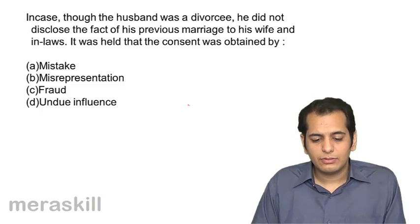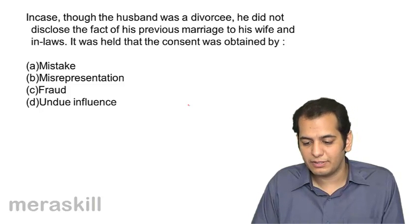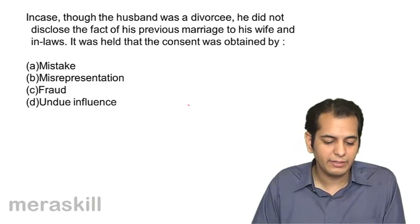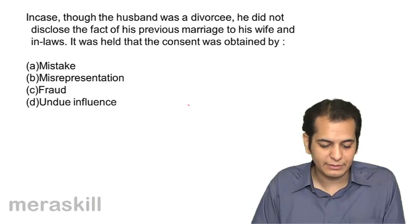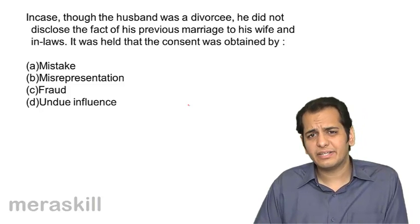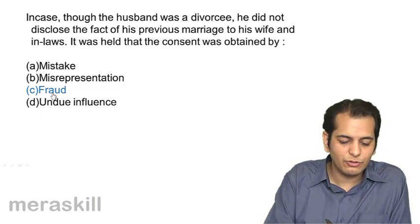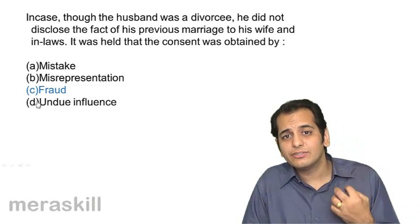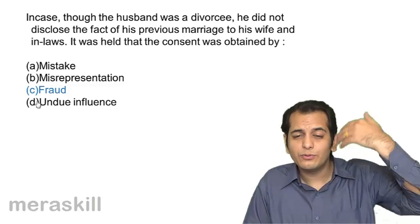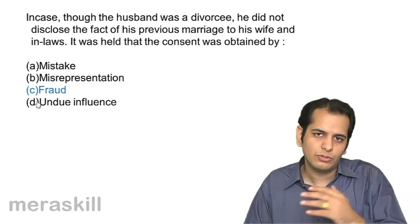In a case where the husband was a divorcee but did not disclose the fact of his previous marriage to his wife and in-laws, it was held that the consent was obtained by: A mistake, B misrepresentation, C fraud, D undue influence. It's a clear case of fraud — A is hiding a fact. It is concealment of fact. A has the duty to disclose, and concealing the fact amounts to fraud.